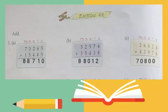Five plus four is nine, plus one is ten — one will carry over. Two plus five is seven. Seven plus one is eight. And five plus three is eight. So the final answer for part B is 88,012.